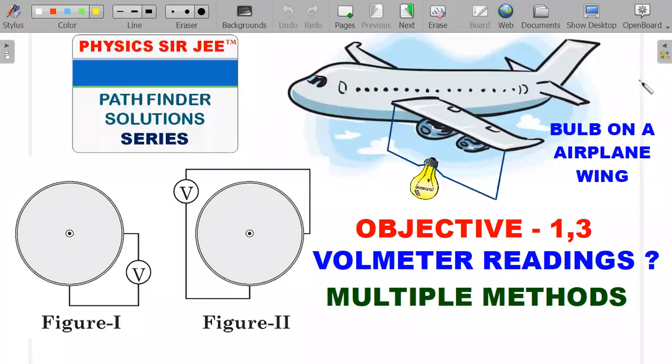Hey you guys, welcome back to the channel Physics Sir JEE. Here we are in the Pathfinder Solution Series. This is a long pending video that I wanted to take up after the two videos I've already made on the voltmeter readings. The links of those two voltmeter reading questions—one for the motional EMF and one for the time varying magnetic field and induced electric field—are in the description below. Please do watch them, and this is the follow-up practice questions that I mentioned at that point.